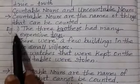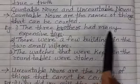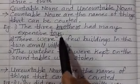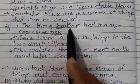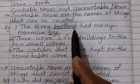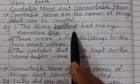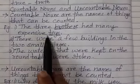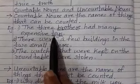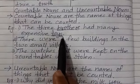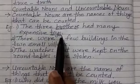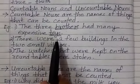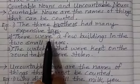For example: the three brothers had many expensive toys. How many brothers? Three brothers. So this word 'brother' is a countable noun. And toys — how were the toys? Expensive. Toys is also a countable noun. We count toys also: one toy, two toys, three toys like that.